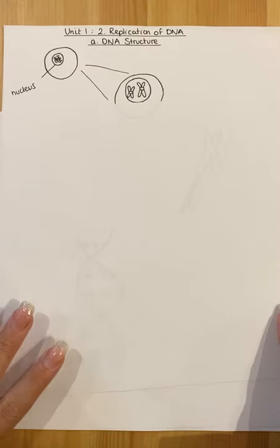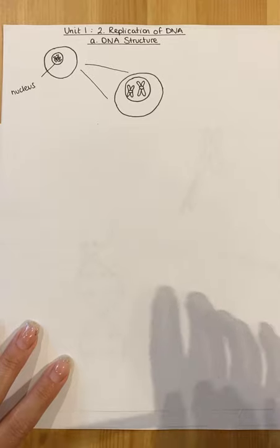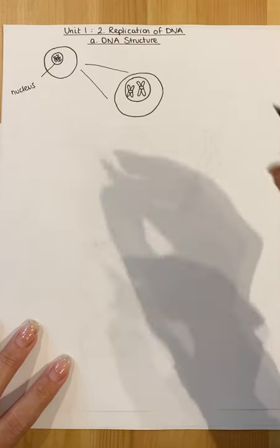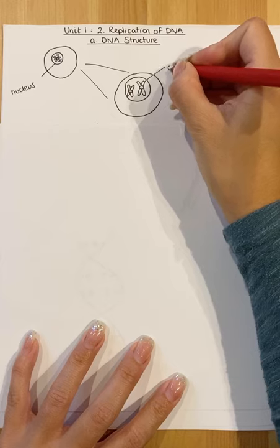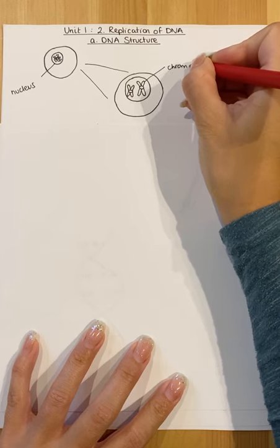So when you zoom in on that slightly, the cell is often shown like this. Within the cell and within the nucleus, these structures are chromosomes.